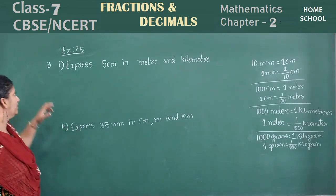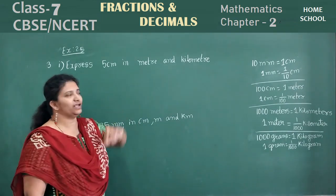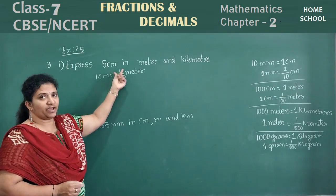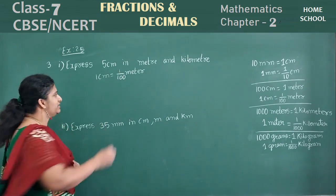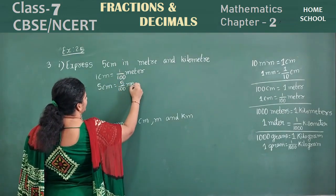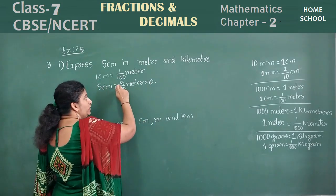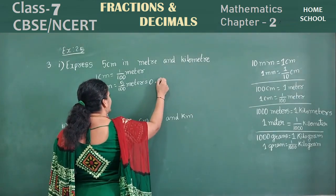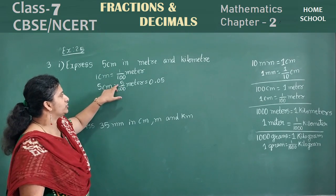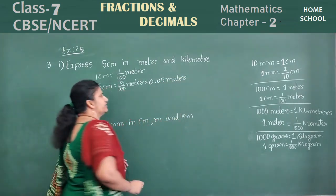Now let's start the first problem: express 5 centimeters in meter and kilometer. For meter: 1 centimeter is equal to 1 by 100 meter, so 5 centimeters is equal to 5 by 100 meter. Denominator has 2 zeros — after two values put the decimal point: 0.05 meters. Next, express in kilometers. Already we have 0.05 meters, and 1 meter equals 1 by 1000 kilometer, so 0.05 meter equals 0.05 by 1000 kilometers.